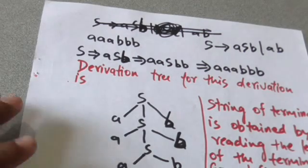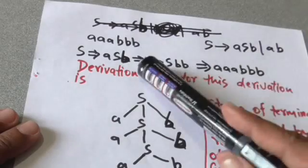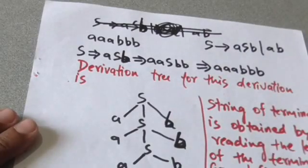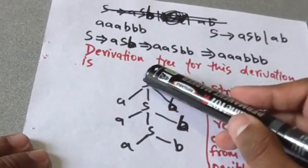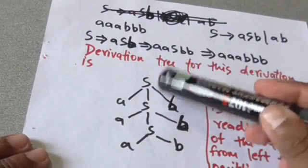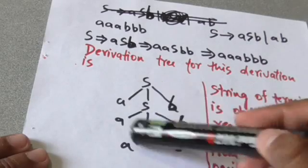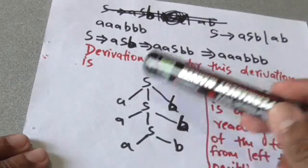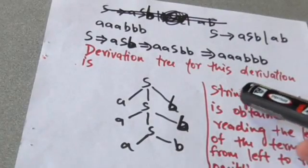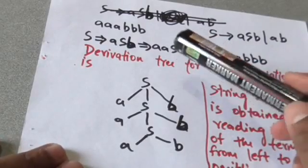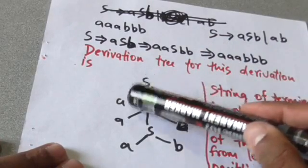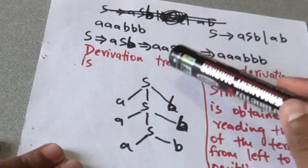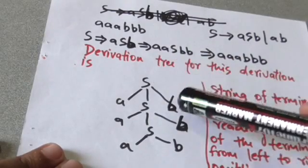This derivation can be represented by a derivation tree or parse tree. The root must be labeled by S. Interior nodes must be labeled by variables and leaf nodes should be labeled by terminals or the empty string. If there is a node labeled by A and its children are labeled from left to right x1, x2, ... xn, then there should be a production in P: A derives x1 x2 ... xn.